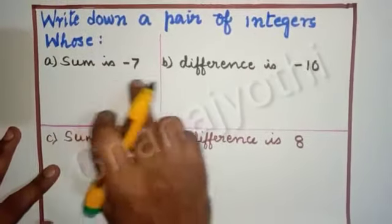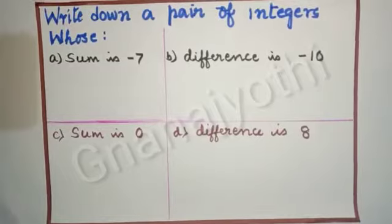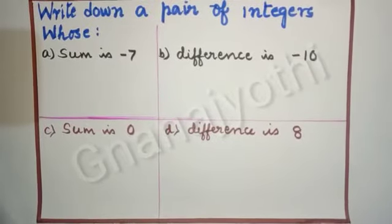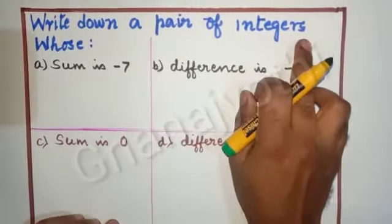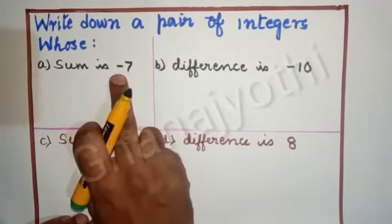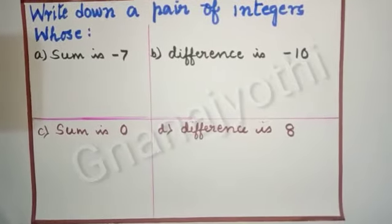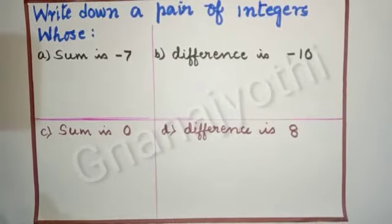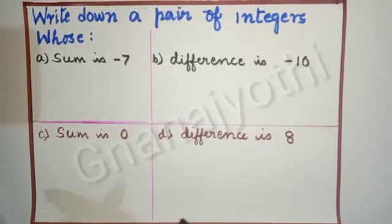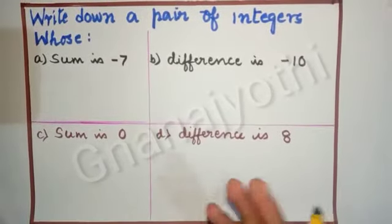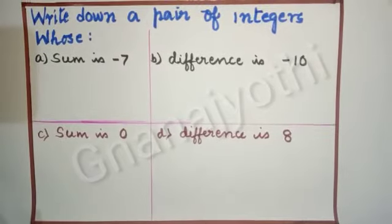Here the first question: sum is minus 7. Sum means addition, which means we have to take any two integers whose sum will get minus 7. For example, minus 5 and minus 2 gives 7. Minus 4 and minus 3 gives 7. So you can choose any numbers which give the sum of 7.